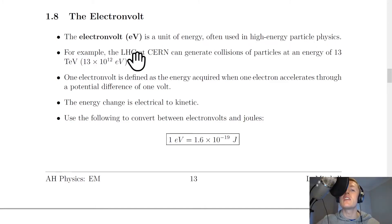For example, the Large Hadron Collider, LHC, at CERN can generate collisions of particles at an energy of 13 tera electron volts, which is about 13 times 10 to the 12 electron volts. So this can be a very useful unit when we're talking about really large energies.